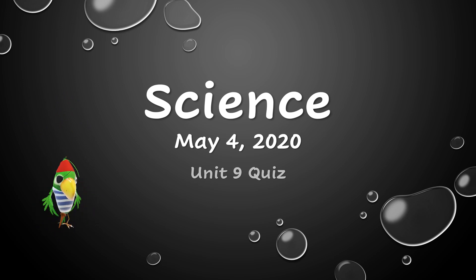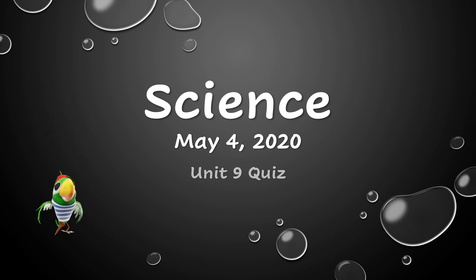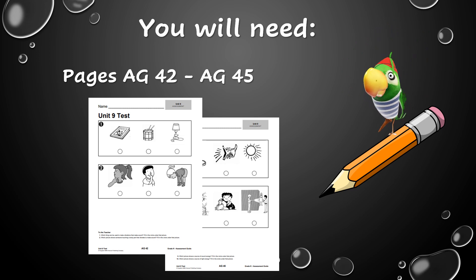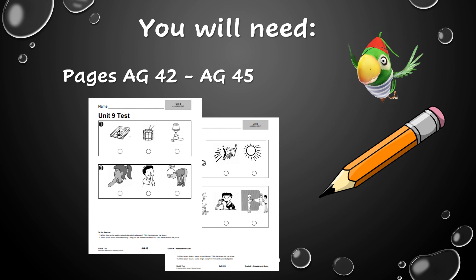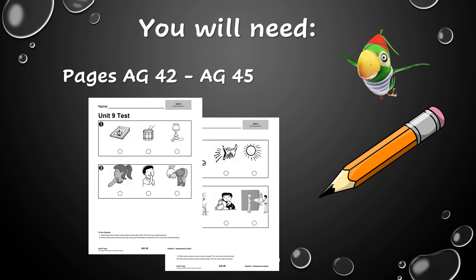Hi everybody, today is Monday May 4th. In this science lesson you are going to be taking the unit 9 quiz. For today's lesson you will need the science quiz, which is pages AG 42 through AG 45, and a pencil. Make sure you have all those items, and once you have those ready you'll be ready to begin.